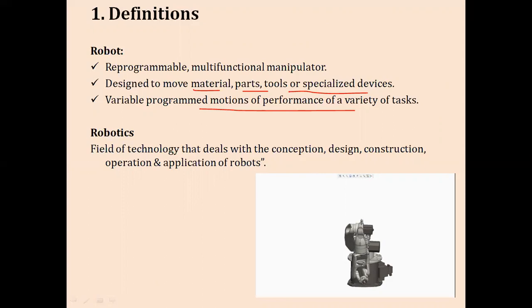A robot moves materials, parts, or any specialized devices through programmed motions. Programmed motions means you are defining the arms of the robot to move in a particular direction — it may be the X, Y, or Z axis — to perform a variety of tasks. The branch of technology involved with the designing, construction, programming, operation, and application of robots is called robotics.